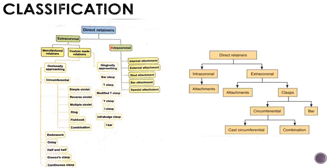In short, direct retainers are intracoronal and extracoronal. Intracoronal are the attachments, and extracoronal are again attachments and clasps. Clasps are mainly circumferential and bar. In circumferential there is cast circumferential and combination. This is a brief overview of the classification; each type will be covered in this video.